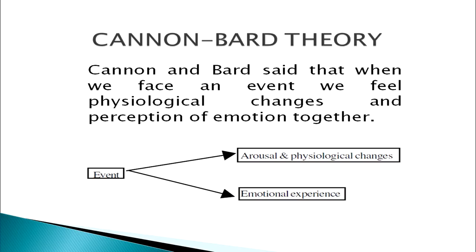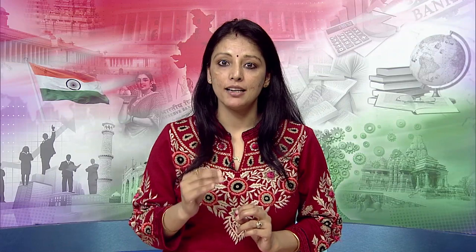The next theory of emotion is the Cannon-Bard theory. Contrary to the James-Lange theory, Cannon and Bard said that when we face an event, we feel physiological changes and the perception of emotion together. That is, when there is an event, the arousal and physiological changes as well as the emotional experience happen simultaneously. For example, if I see a bear, my heart starts racing, my blood pressure rises, my body starts shaking, and I am afraid — all things are happening together. That is how Cannon and Bard tried to explain how emotion happens.